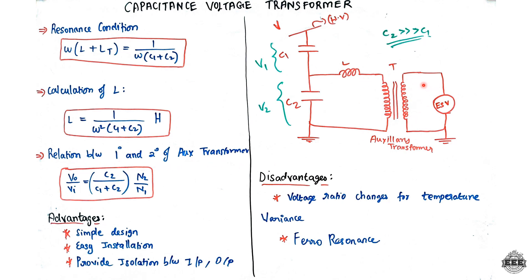The output and input relation is V0 by Vn equal to C2 divided by (C1 plus C2) into turns ratio N2 by N1. The main advantage is simple design - it is easy to design and install. It also provides isolation between input and output. The main disadvantages are ferro-resonance, as well as voltage ratio changes with temperature. Thanks for watching, bye.